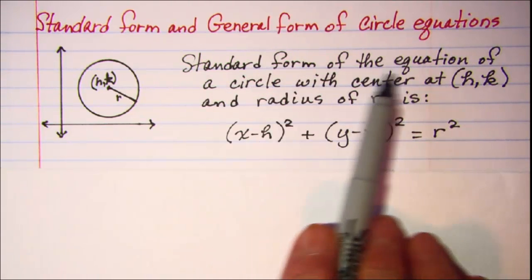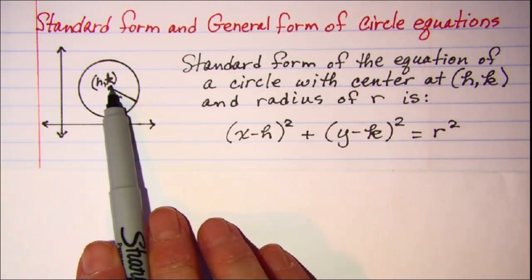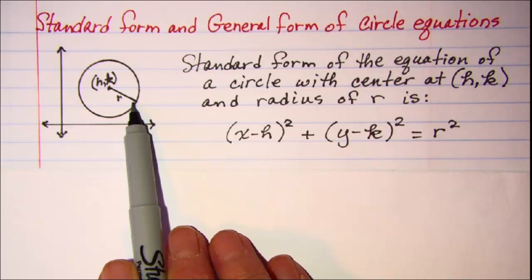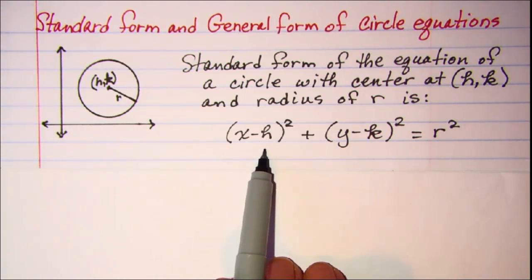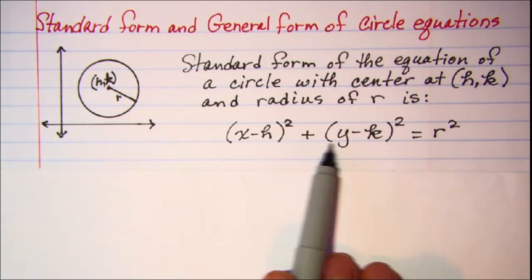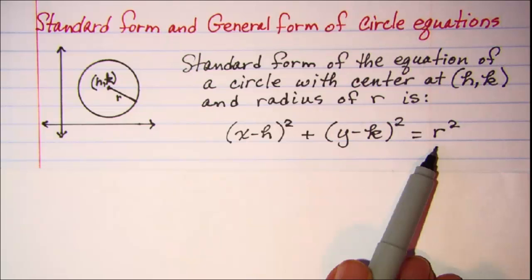The standard form of the equation of a circle with the center at (h,k) and a radius of r is (x - h)² + (y - k)² = r².